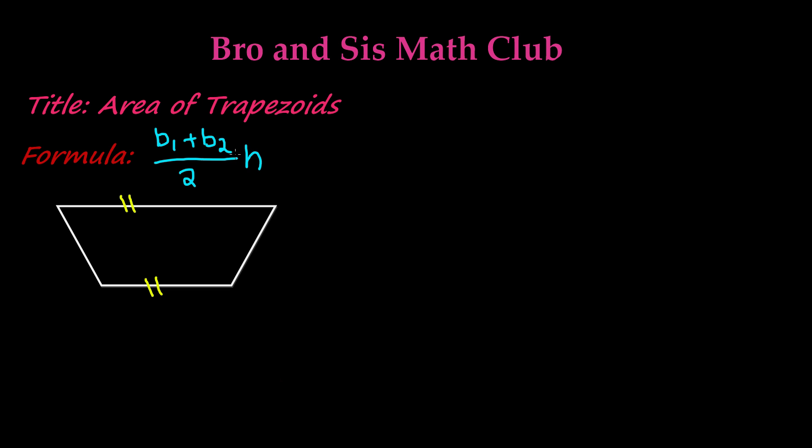So let's go ahead and figure out what base 1 and base 2 are, and what's the height of this trapezoid. So base 1 is the top base. So this is base 1. And the bottom base is base 2.